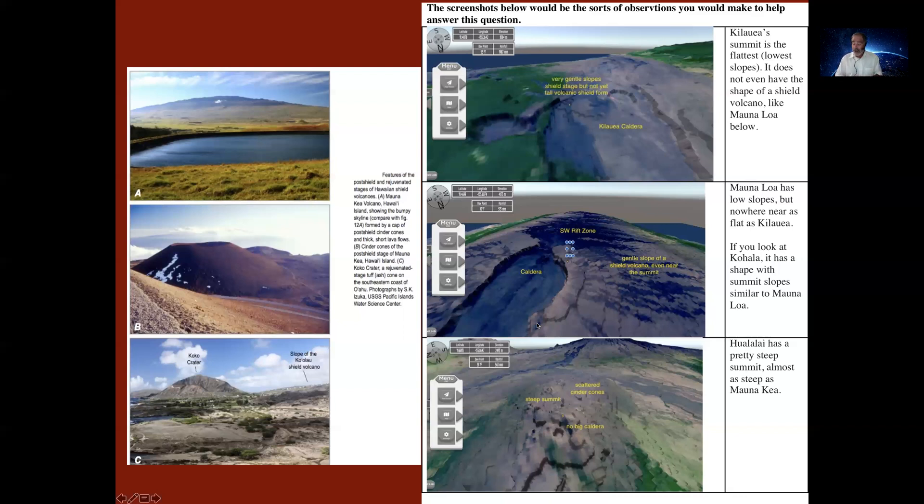It has some characteristics of a post-shield stage with cinder cones up on top, but it still has rift zones and active lava flows.